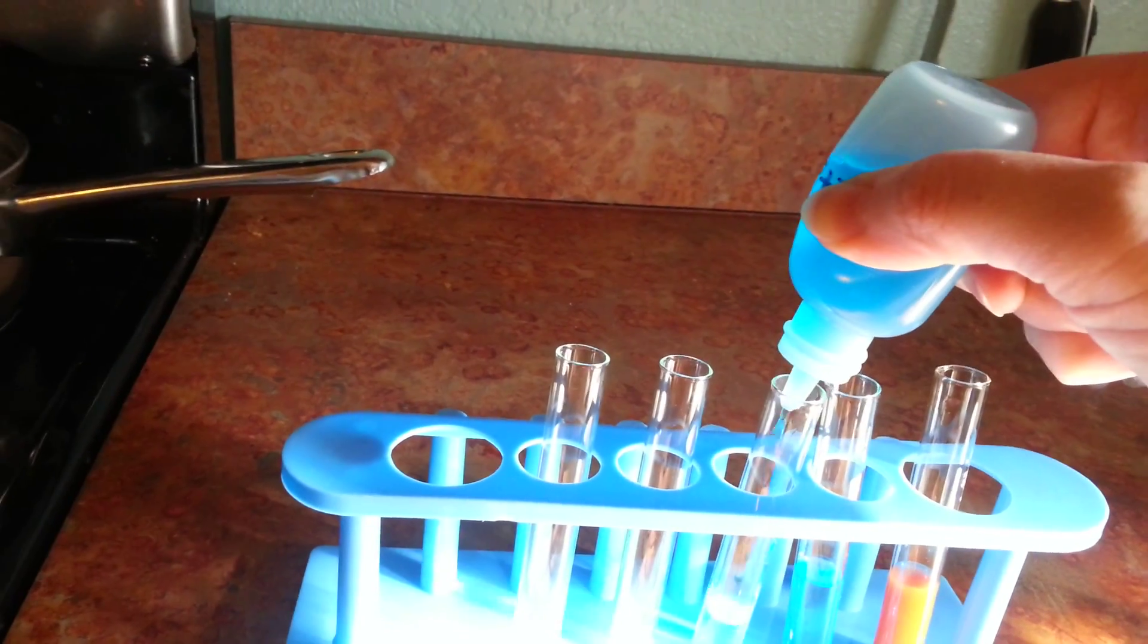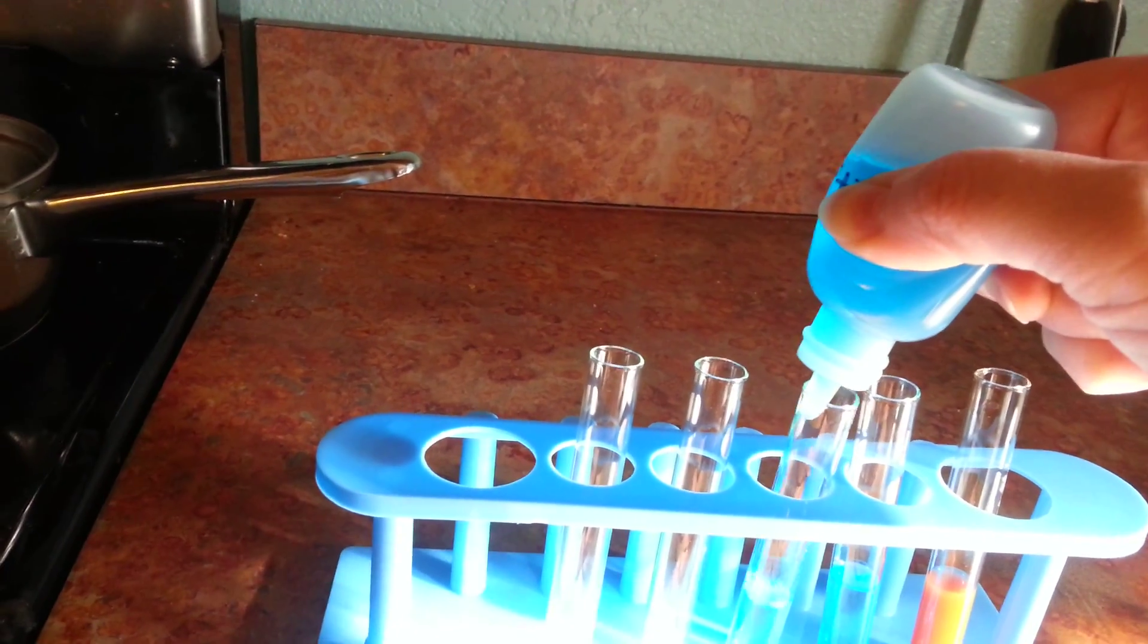After that you're going to add your Benedict solution until you have a nice light blue color in the test tube. I know it's probably hard to see the light blue since it's up against the test tube rack but there's your light blue solution right there.